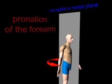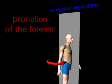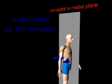Pronation of the forearm is medial rotation of the forearm toward the center. Supination of the forearm is lateral rotation of the forearm away from the center.